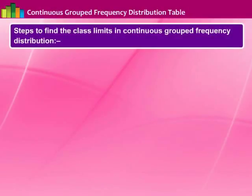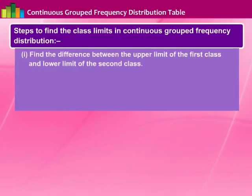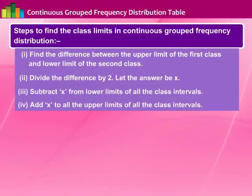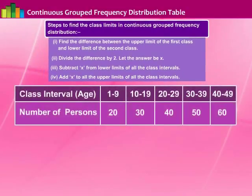To find the class limits in a continuous group frequency distribution, we need to follow a few steps. First, find the difference between the upper limit of the first class and the lower limit of the second class. Second, divide the difference by 2 — let the answer be x. Third, subtract x from the lower limits of all class intervals. Fourth, add x to the upper limits of all class intervals. The new limits will be the true class limits. Form the frequency distribution table for the following data, which gives the ages of persons who watched a particular channel on TV.